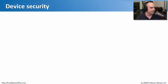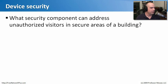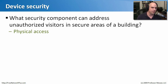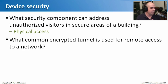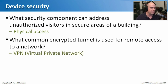Let's review what we've learned about device security. First question: what security component can address unauthorized visitors in secure areas of a building? That would be physical access — we want to be sure we know where visitors are at all times and have policies and procedures for secure areas. Next question: what common encrypted tunnel is used for remote access to a network? A virtual private network, or VPN, becomes extremely useful when trying to get remote access while staying secure.